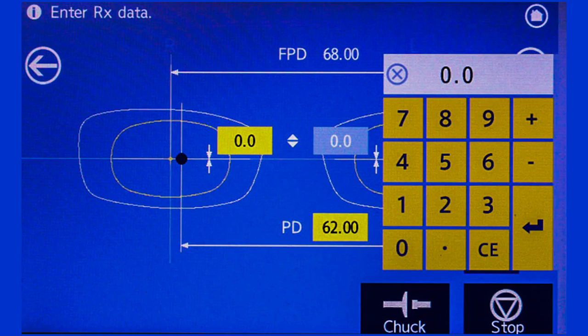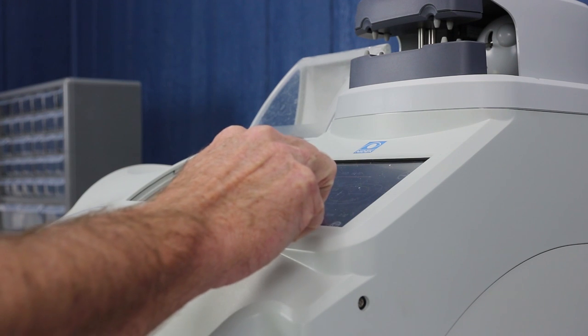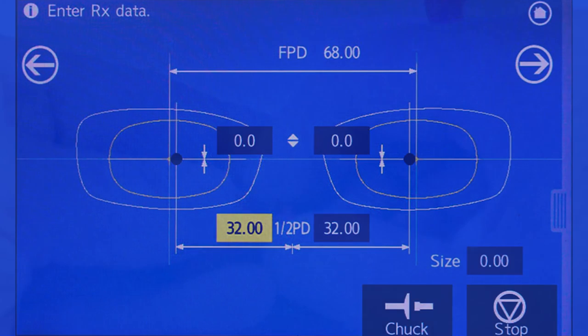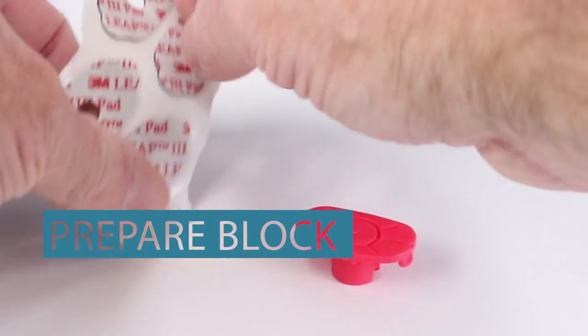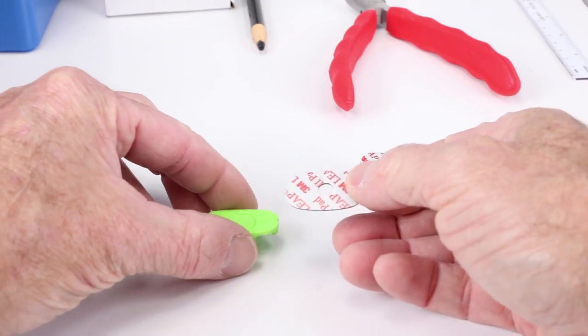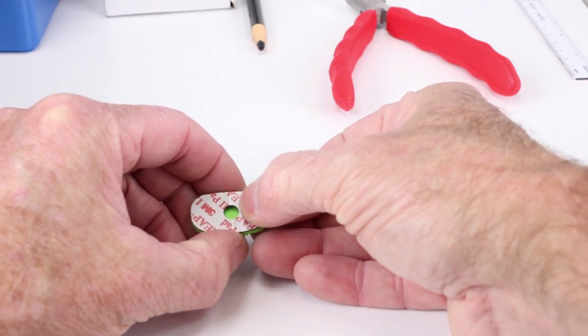Next, because this is a basic single vision job, you may decide to change the OC height. So you would use this screen to do that. Next would be PD, which obviously can be done either in a monocular setting or a binocular setting. And that would be a great time to prepare a couple of blocks, because the next step after this is going to be applying the block to the front of the lens.